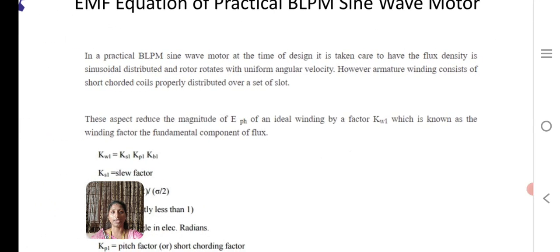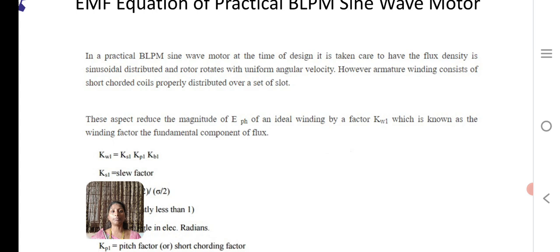Coming to practical BLPM, in a practical permanent magnet sine wave motor, at the time of design itself, it is taken care to have the flux density sinusoidally distributed and rotor rotates with uniform angular velocity. At the construction itself, it is designed like this in order to have the flux density sinusoidally distributed and the rotor rotates with uniform angular velocity.